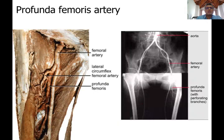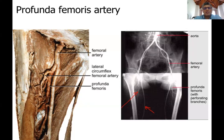In an arteriogram with dye injected, this is the superficial femoral artery - the main femoral artery - and this is the deep femoral or profunda femoris artery, which lies between the femoral artery and the bone itself.